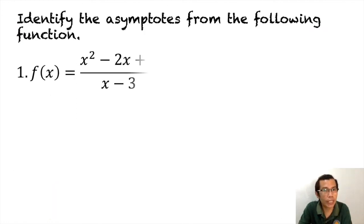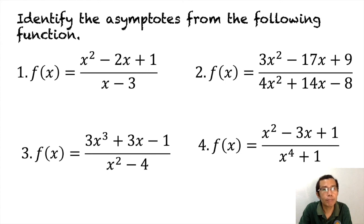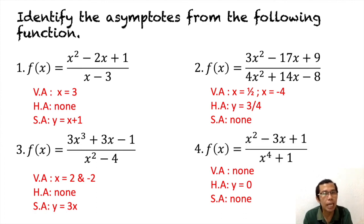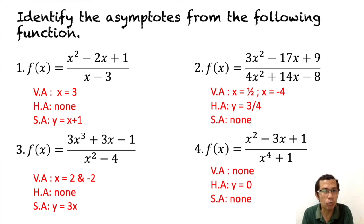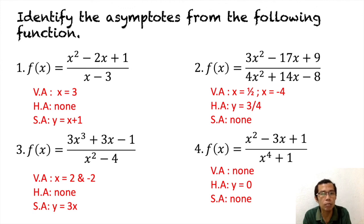I'll give a few numbers to practice — go ahead and pause the video if you want to answer. For answer number one: vertical asymptote is x equals three; horizontal asymptote, none; slant asymptote, y equals x plus one. For number two: vertical asymptotes are x equals one half and x equals negative four; horizontal asymptote, y equals three over four; slant asymptote, none. For number three: vertical asymptotes are x equals two and x equals negative two; horizontal asymptote, none; oblique asymptote, y equals three x. For number four: vertical asymptote, none; horizontal asymptote, y equals zero; slant asymptote, none.